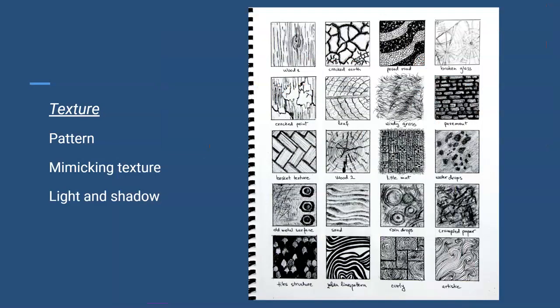And we have texture. Here you can use pattern, mimic texture, or use light and shadow. Such as this image here, basket texture. That's just repeating the same pattern over and over again, creating texture. Or mimicking texture could be kind of like this cracked earth, how you're just mimicking what that cracked, dry earth would look like. And using light and shadow would be kind of like this sand. They're using the positive and negative space to create those little ridges in the sand.